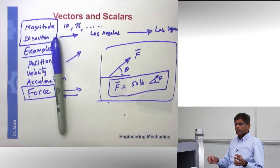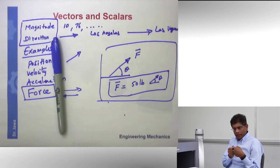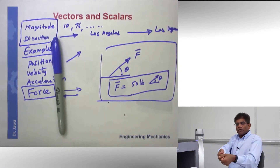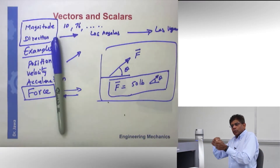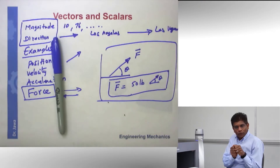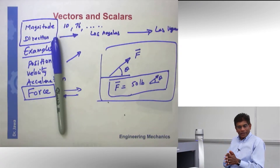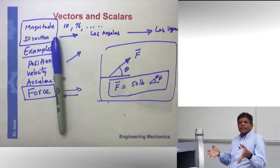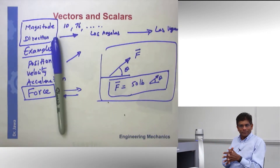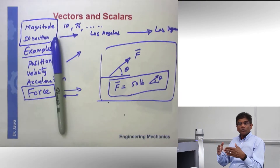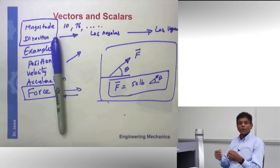So now that we know how to represent a vector, the next topic is how can we manipulate these vectors. Think about it — you are applying some force, say you want to pull something. It is too heavy, so you ask someone else to help. Two of us are pulling a big piece of furniture; I pull this way, the other person pulls that way. So what is going to be the net effect? We have to figure out a way to add two force vectors.